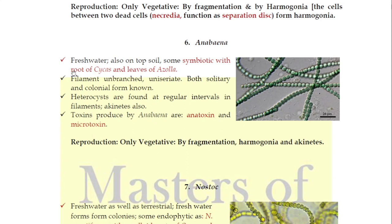Now we come to the next alga, Anabaena, which is member number six from Cyanophyta. It is also a freshwater alga and is also found on top of the soil. Some species of Anabaena show symbiotic relationships — you may have read about coralloid roots of cycads where it is found, and also in the leaves of Azolla. It is also filamentous, unbranched, and uniseriate. Its characteristic feature is that heterocysts are found at regular intervals — for example, after every 9 cells you see a heterocyst.